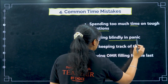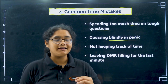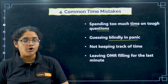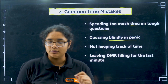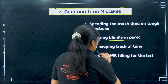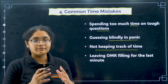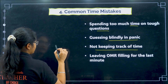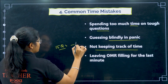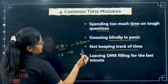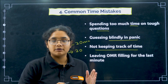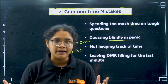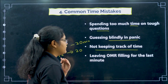Next, avoid guessing blindly in panic. There is no negative marking, so for every uncertain question first try the elimination method - eliminate two options and from the two remaining make a smart guess. Do not just put anything blindly. Also, keep track of time - there will be a clock in every classroom. Set a target like solving 15 questions every 20 minutes, or having at least 25 to 30 questions done by the 30-minute mark. Check the clock frequently.